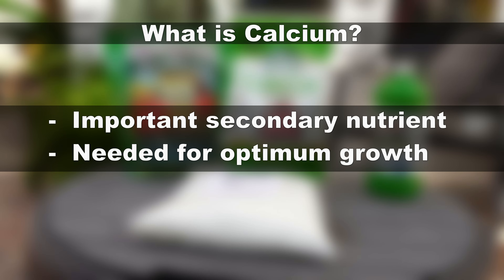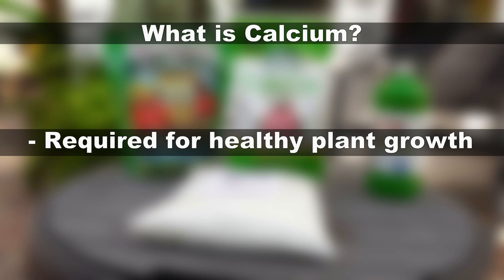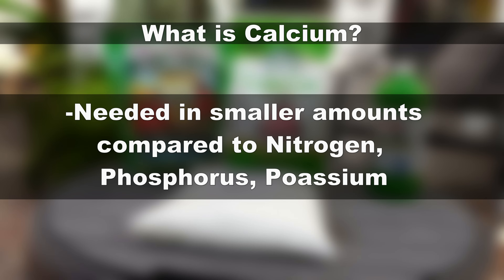So what is calcium? Along with magnesium and sulfur, calcium is one of the three secondary nutrients that are needed by plants for optimum growth. Other than primary nutrients like nitrogen, phosphorus, and potassium, calcium is a secondary nutrient that plants need for healthy growth, though it is needed in lesser amounts compared to the primary nutrients.